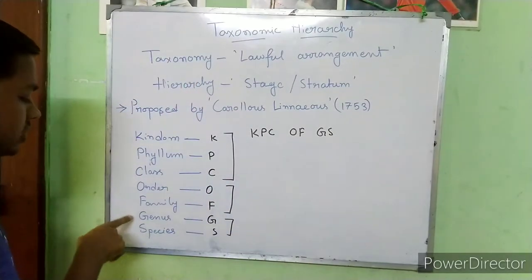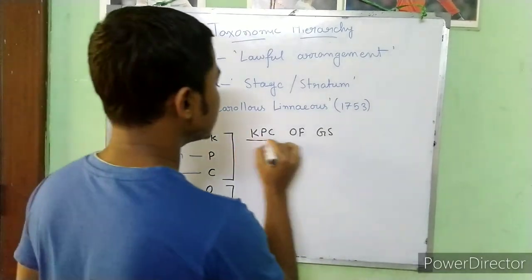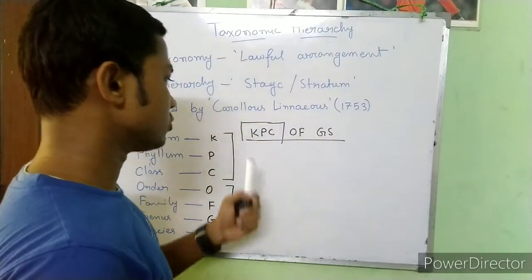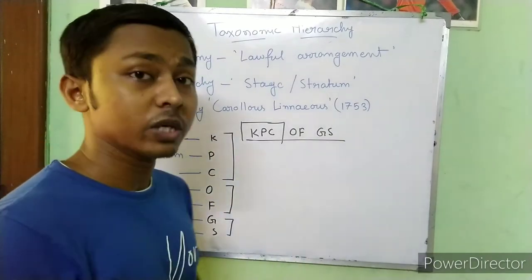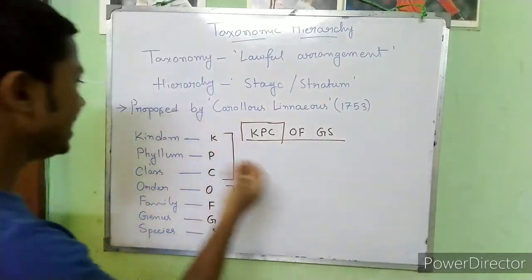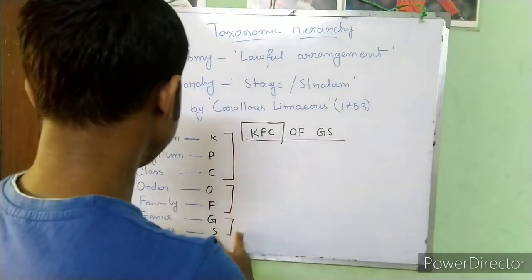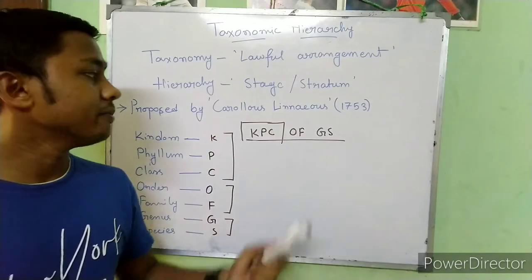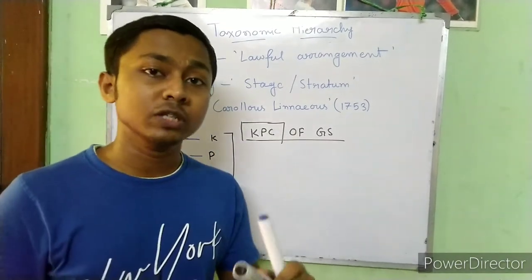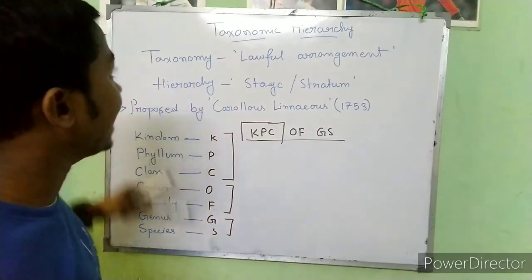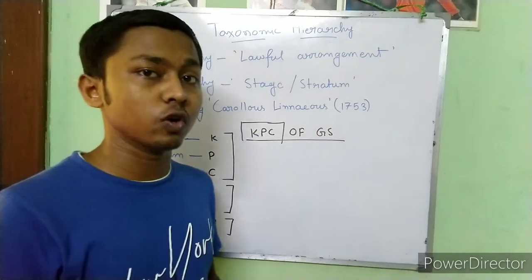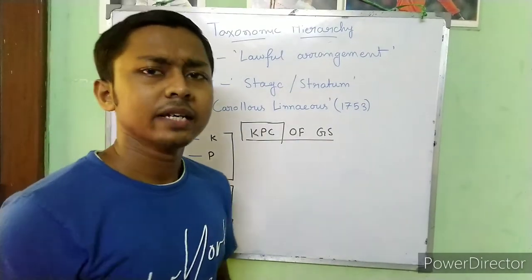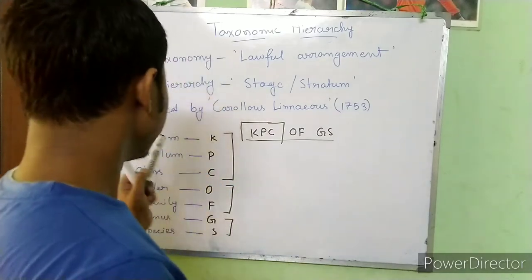In full form: Kingdom, Phylum, Class, Order, Family, Genus, Species — represented as KPC of GS. KPC of GS is a mnemonic where KPC is actually the name of a medical college in West Bengal, making it easy to remember.